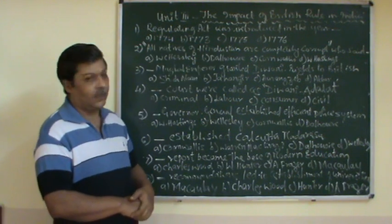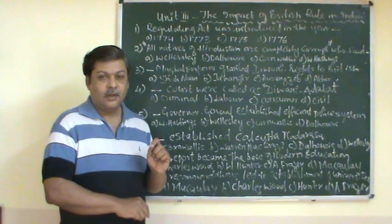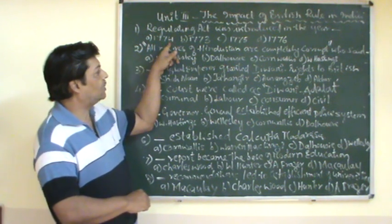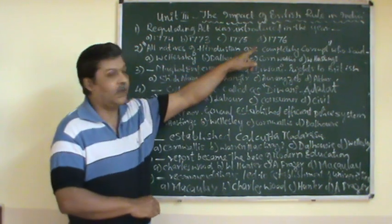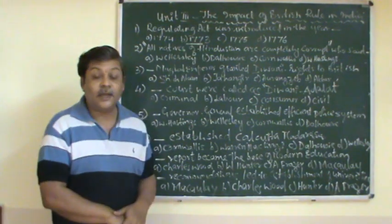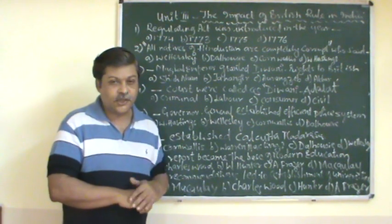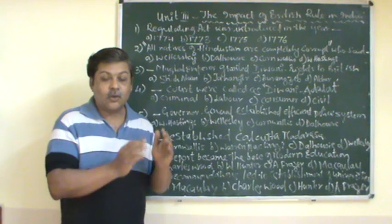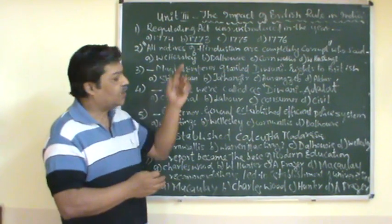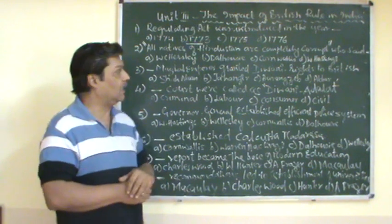The Regulating Act was introduced in which year? The choices given are 1774, 1773, 1775, and 1776. The answer is 1773. The Regulating Act was introduced by the British government to bring control over the East India Company administration in India, and that was the intention behind introducing it.